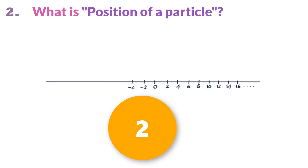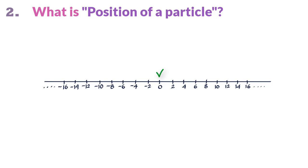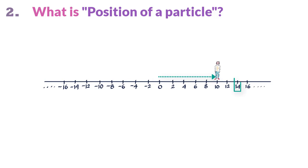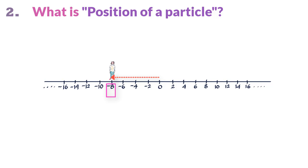A particle or object's location is given relative to the origin on the x-axis. As a commonly accepted notation, if it is to the left of the origin it is a negative position, and if it is to the right it is positive. So Minnie is at plus 10 meters from the origin if she is here, or negative 8 meters if she is here.